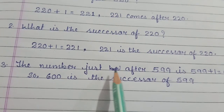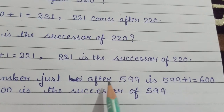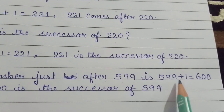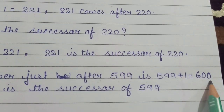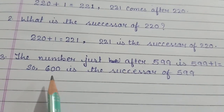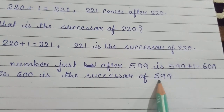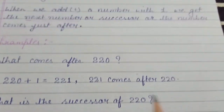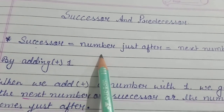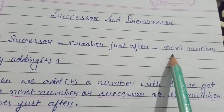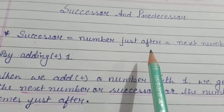The number just after 599 — just after means we have to add 1. So 599 plus 1 is equal to 600. We can say 600 is the successor of 599. I hope you all have understood that successor, number just after, and next number are the same, and we get them by adding 1.